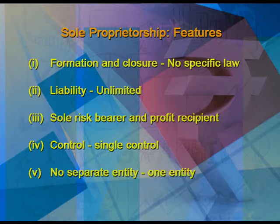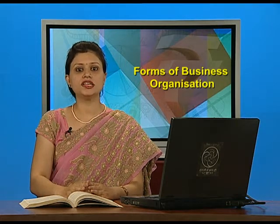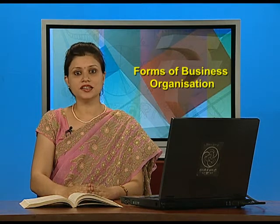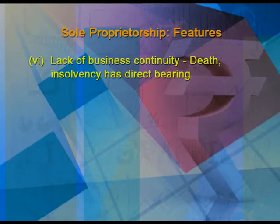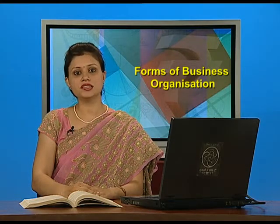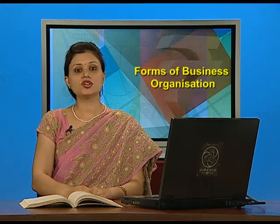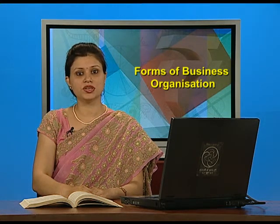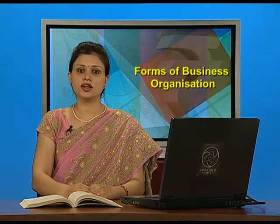Fifth is no separate entity. This means business and owner are not separate from each other — they have the same identity and are both having one entity; business is not separate from its owner. Lastly, lack of business continuity means death, insolvency, as well as any other cause has a direct bearing on the continuity of the business. In case of the death of the sole proprietor, business will also be closed. As well as in case of insolvency of that person, business will also be closed.